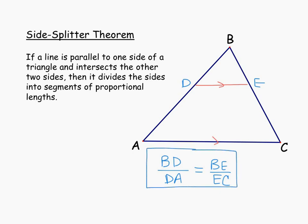It's also important to notice that there are two similar triangles in this diagram. Since DE is parallel to AC, we have two pairs of congruent corresponding angles: angle BDE is congruent to angle BAC, and angle BED is congruent to angle BCA. So the smaller triangle BED is similar to the larger triangle BCA by angle-angle similarity. We may need to use those similar triangles to find other missing measurements.